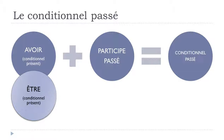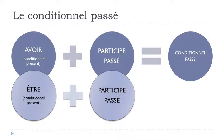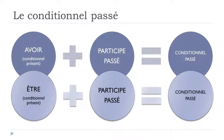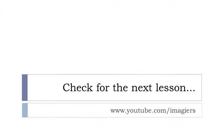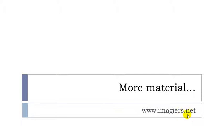To summarize: conditionnel présent of avoir or être, plus the participe passé, gives you the conditionnel passé form. I hope it was clear. You can find all the videos at YouTube.com/Imagier and the website is Imagier.net. Have a great day, bye bye!